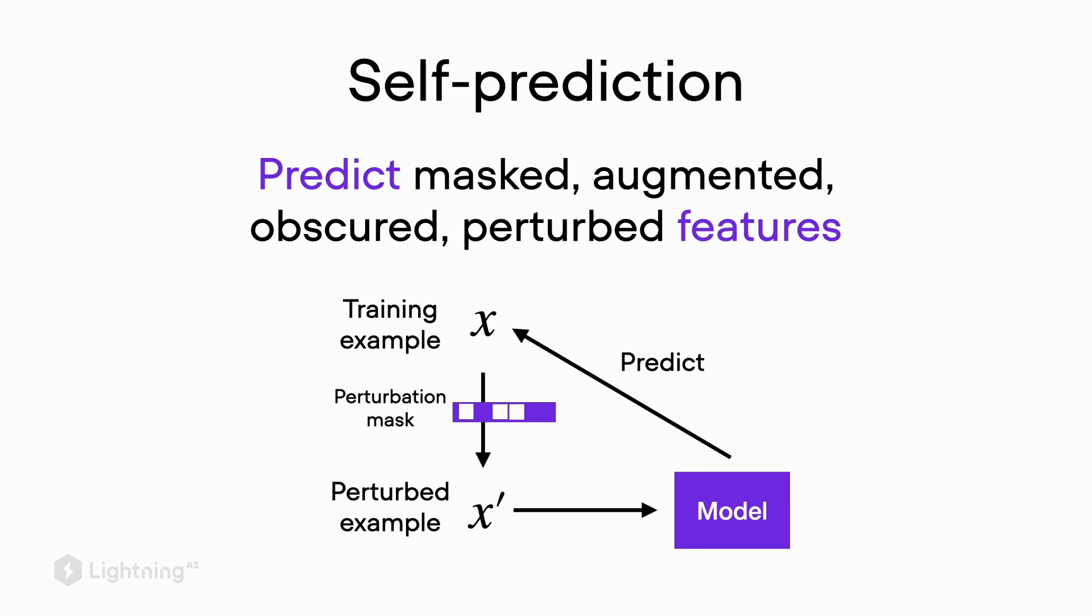It's called self-supervised learning or self-prediction because we can create the labels ourselves. Here the prediction target is created from the feature, or more precisely, the feature is the prediction target. However, note that this is still a supervised prediction task. The model gets the perturbed features as input and has to predict the original features which are now the target.